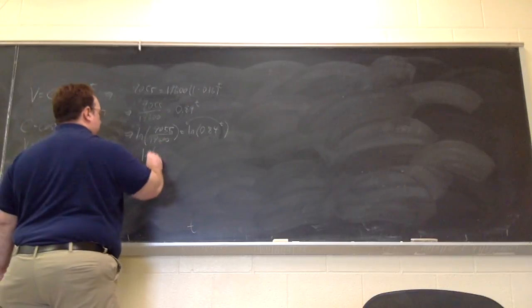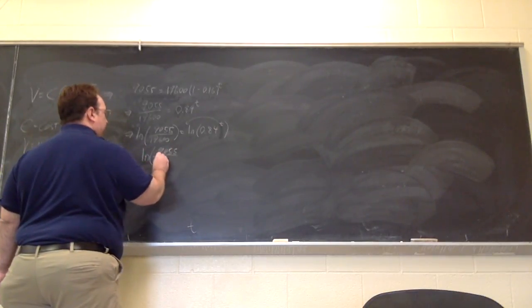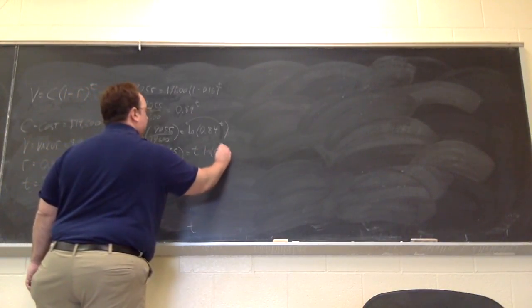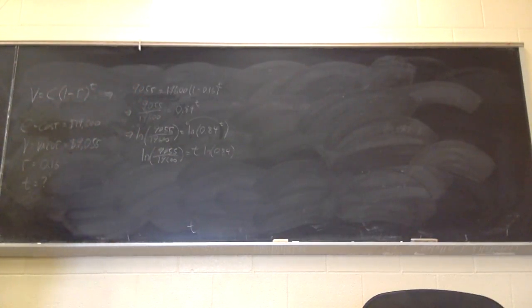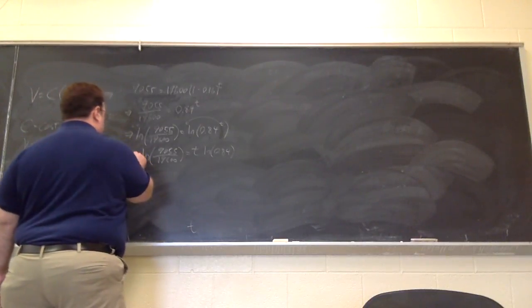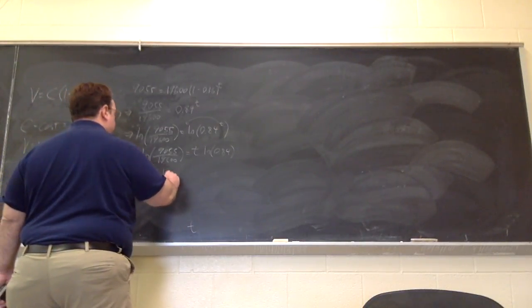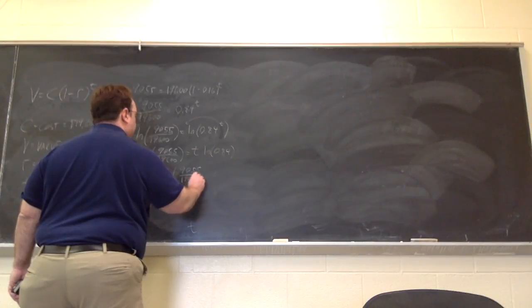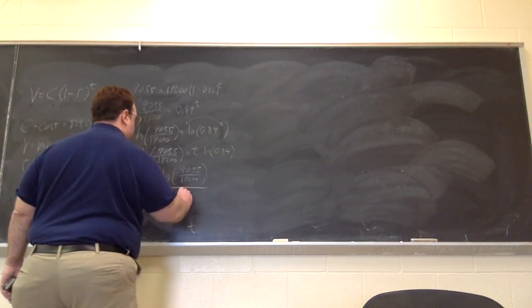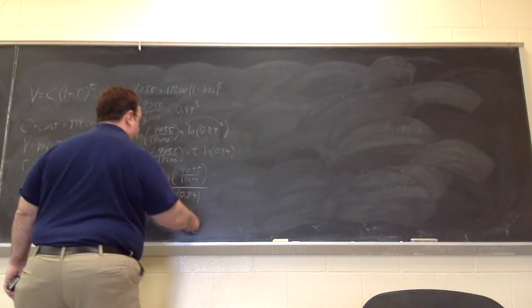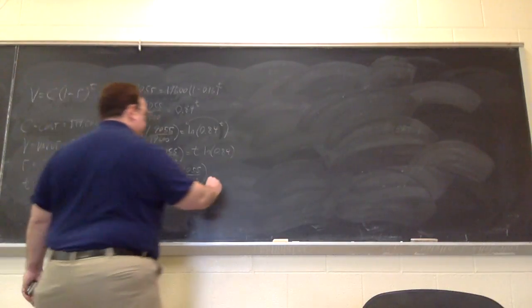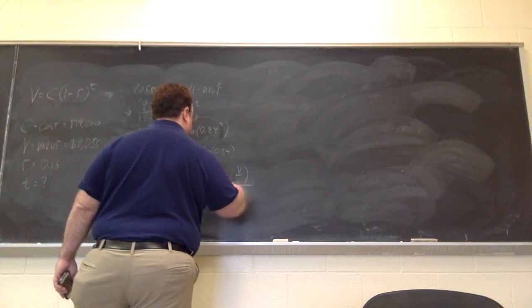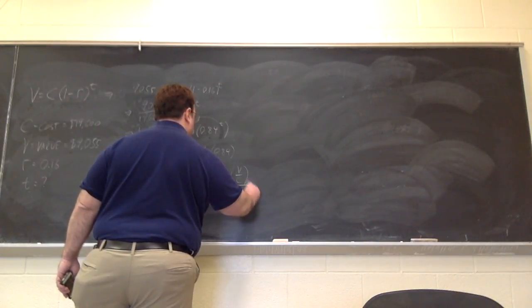So now I have natural log of 9,055 over 19,600 is equal to t natural log of 0.84. So now I can isolate t by dividing by natural log of 0.84. So now my expression for t is natural log of 9,055 over 19,600, so log of that fraction over log of 0.84. So in terms of a formula, it would be natural log of v over c, so present value over original cost, divided by natural log of 1 minus r.